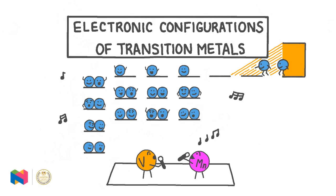In this video, we will learn how to describe the electronic configurations of transition metals and the formation of their ions. We will state the electronic configurations and oxidation states of the first row of D-block elements and their ions, show how they relate to each other, and use the electronic configurations of transition metals to help us define a transition metal.